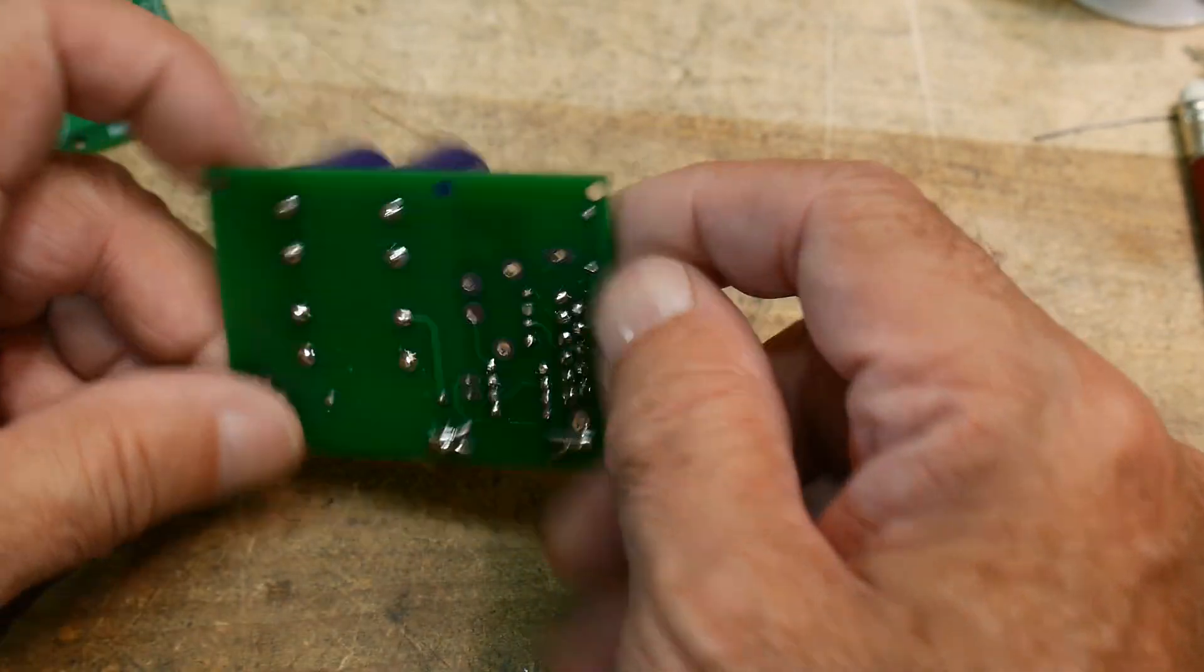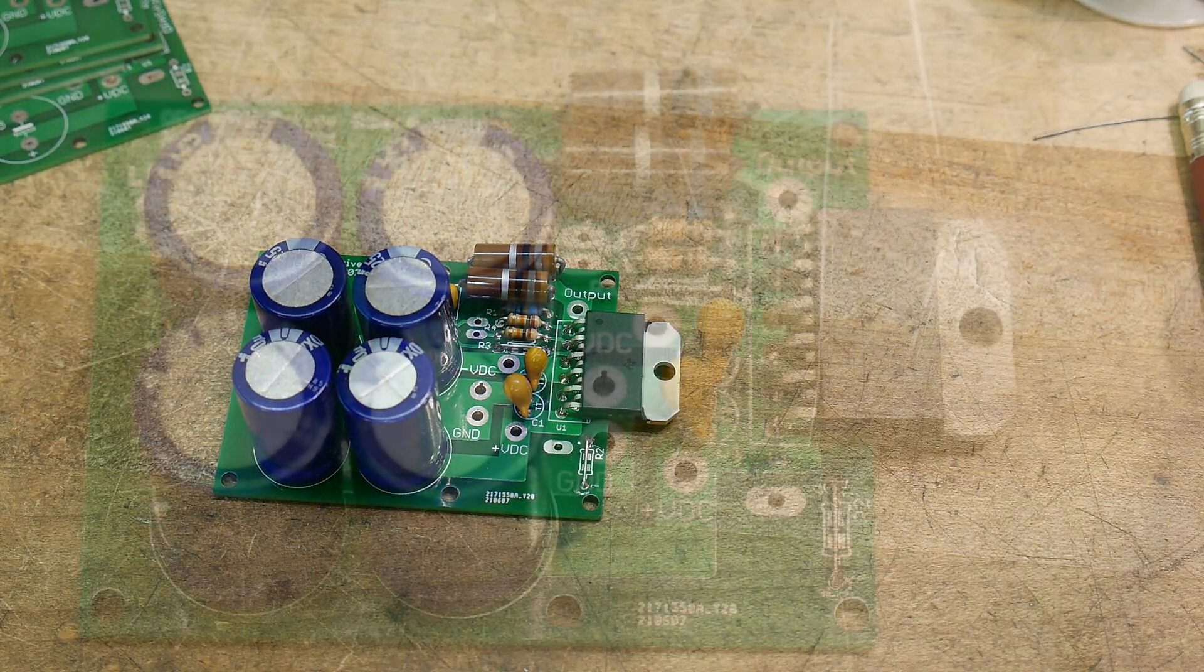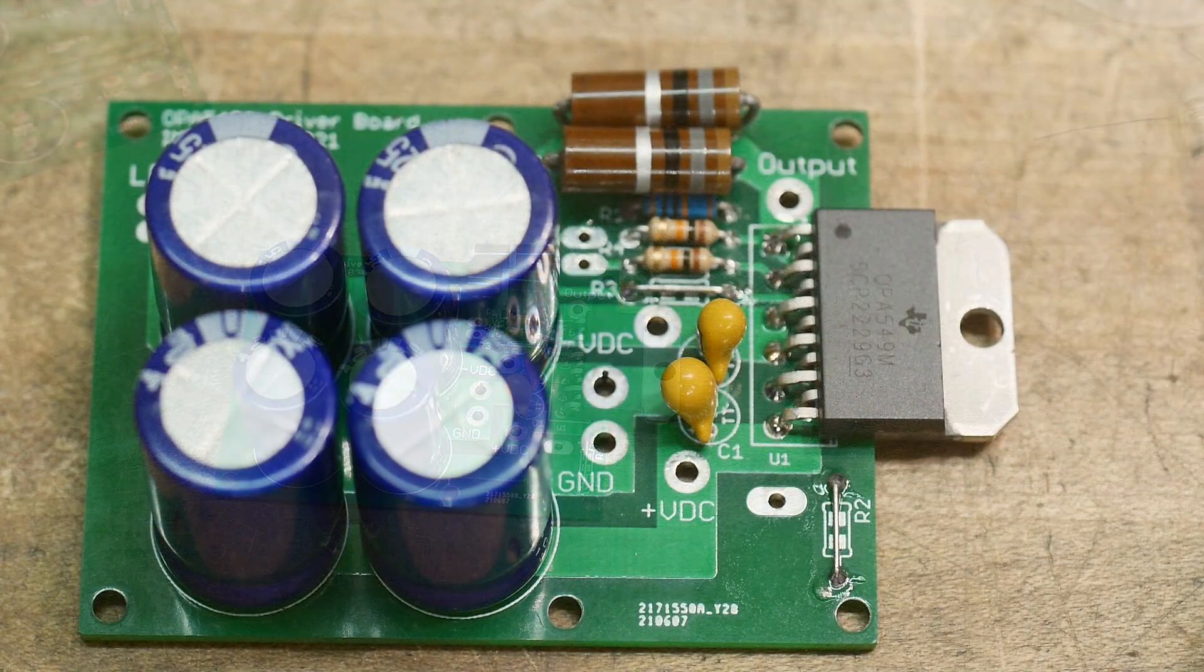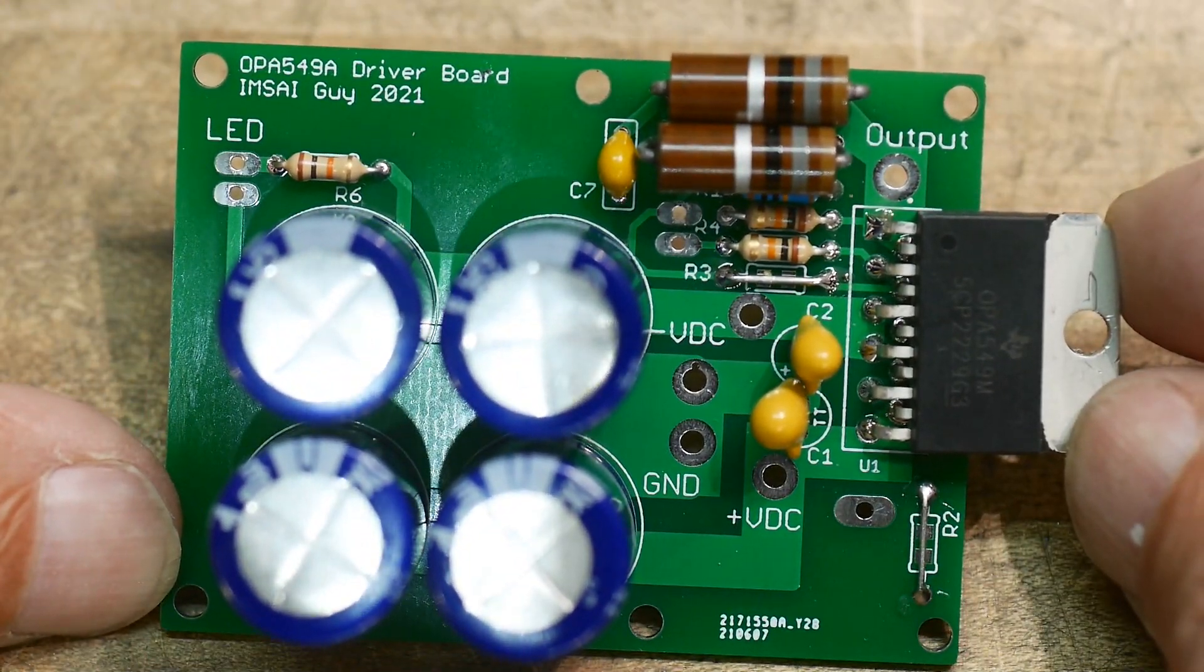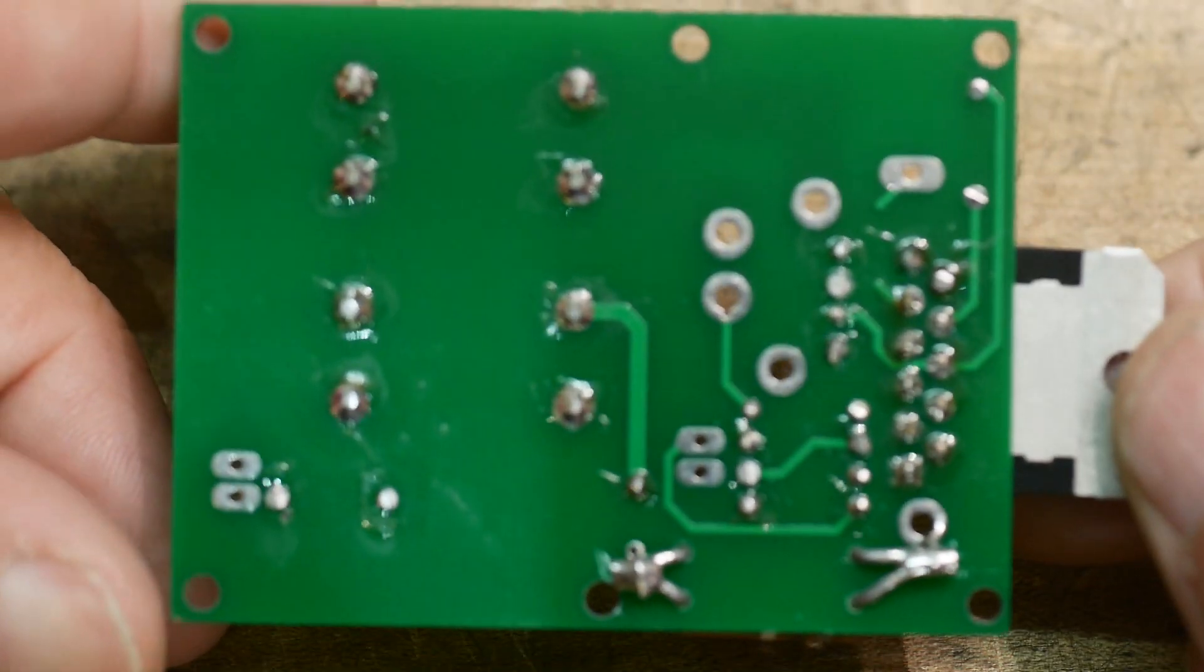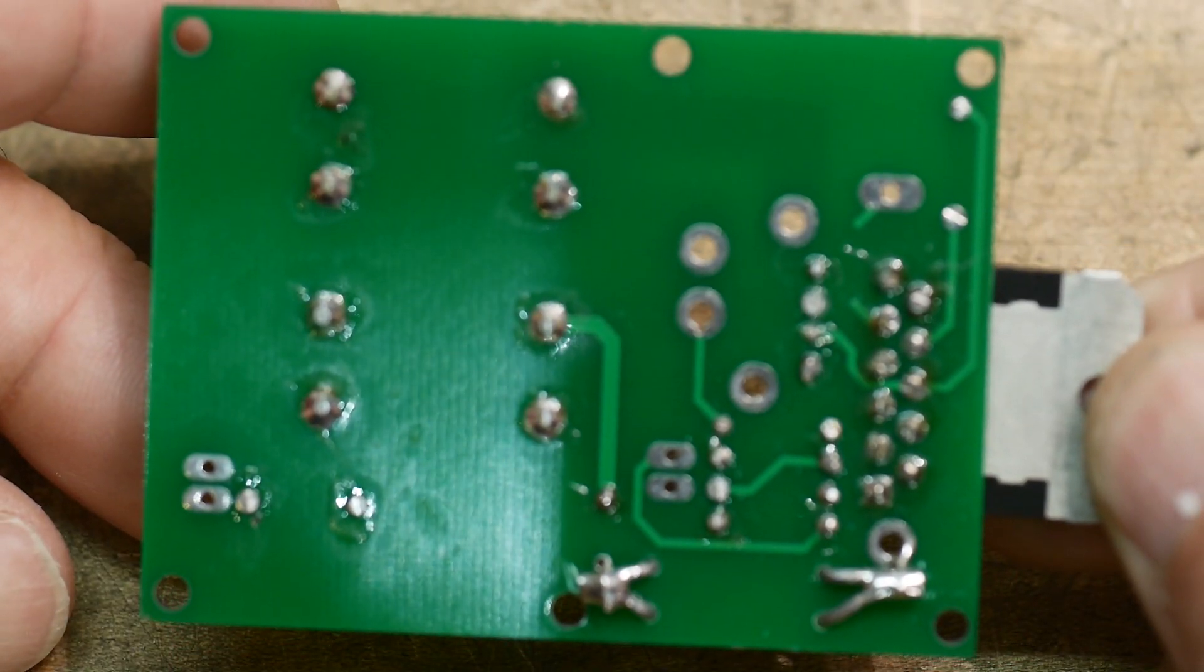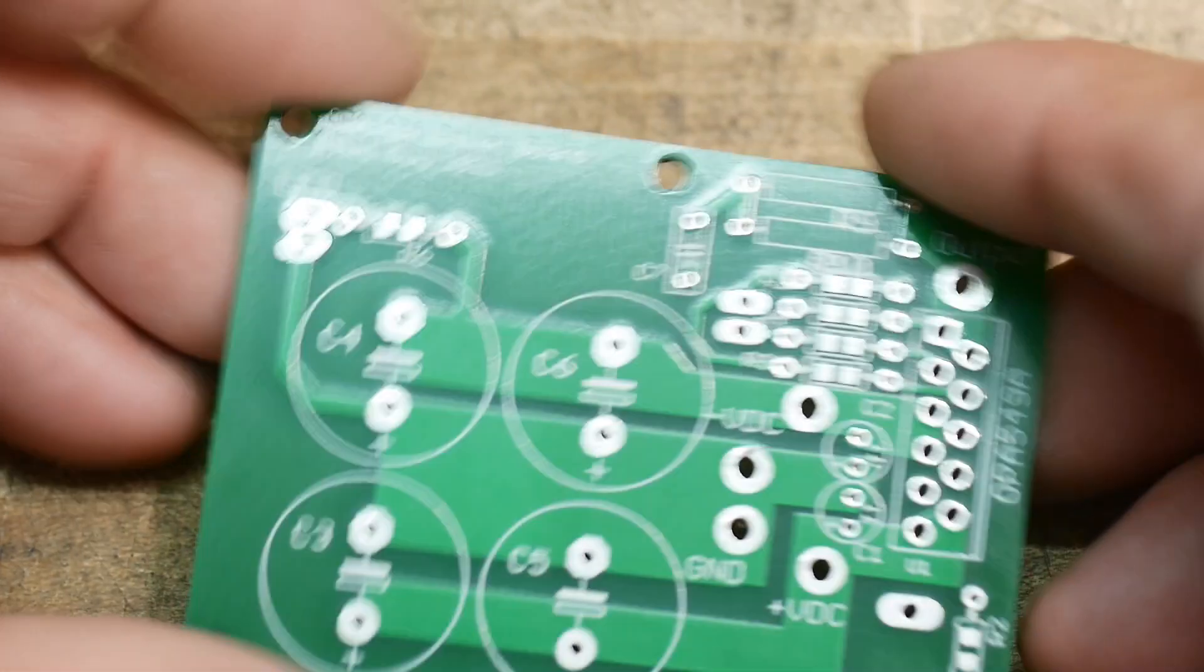Yeah, there you go. So next step is to get it in the board. I thought I'd give you a couple close-ups. Bodge in the back, and here's what the bare boards look like.